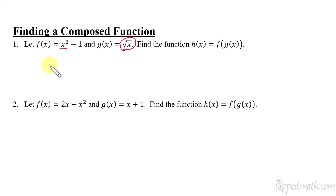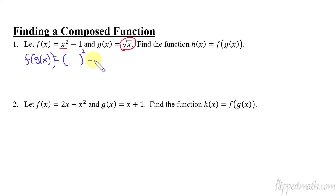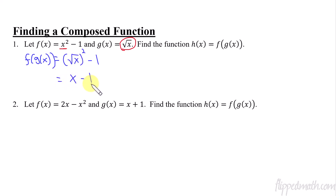So f of g of x is going to equal — there's my instance of x where it's being squared minus one — and what gets plugged in there? g of x does. So it is the square root of x, and then that simplifies to x minus one. That is your f of g of x.